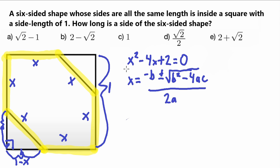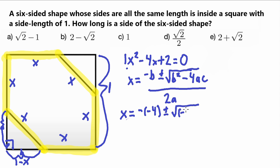Our coefficients are: a = 1 (the coefficient of x squared), b = negative 4 (always look at the sign), and c = 2. Plugging in: x equals negative (negative 4) plus or minus square root of (negative 4 squared minus 4 times 1 times 2), all over 2 times 1. Simplifying: 4 plus or minus square root of (16 minus 8), all over 2.